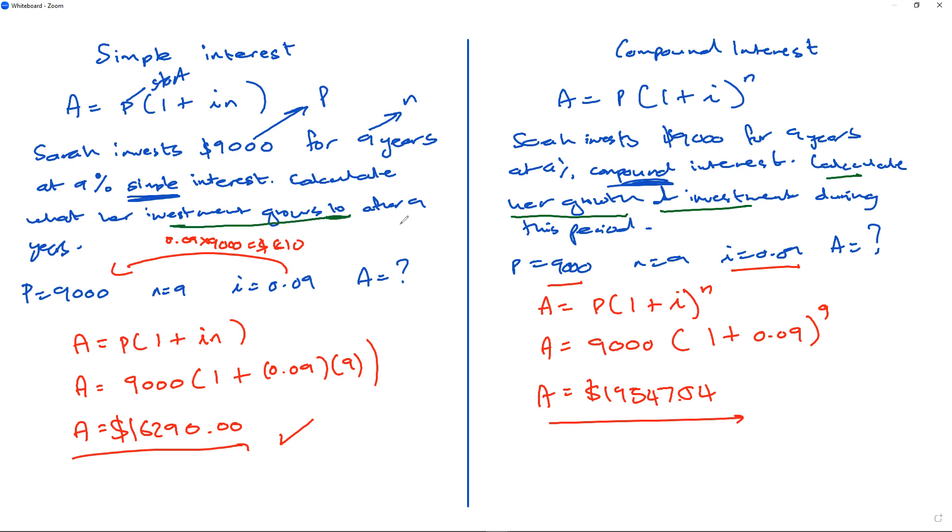The growth of investment means they want you to do one more step: take the final amount and subtract the initial amount. Because that will show you how much the money has grown from $9,000 to $19,547. So here you would write 'growth of investment.'